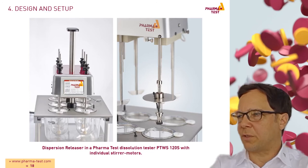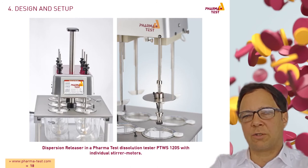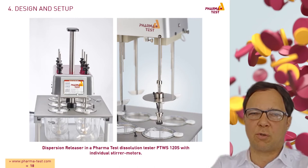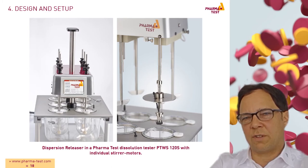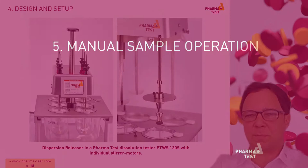For the dispersion releaser we have dissolution testers with individual speed control. Here in this picture a PTWS 120S with individual speed control is shown. It will be possible to drive each individual dispersion releaser with a different speed. On the right side we see how the dispersion releaser is coupled to the stirrer of the standard USP2 equipment.